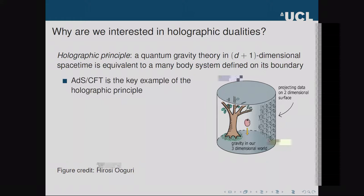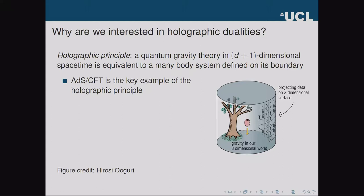This is a general principle expected to hold for any theory of quantum gravity. The most well-studied manifestation of this principle is the ADS/CFT correspondence — a conjectured duality between quantum gravity theories living in anti-de Sitter space and conformal field theories living on the boundary of that space. This correspondence has been well studied for a number of years, but quantum gravity and conformal field theories are complicated, making exact rigorous calculations quite difficult.